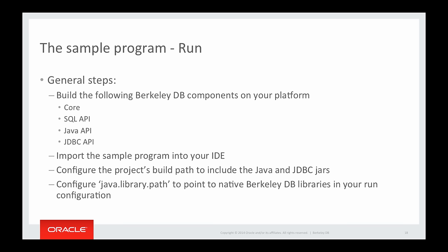Here are the general steps to run the sample program. First, you need to build the following Berkeley DB components on your platform: the Core API, the SQL API, the Java API, and the JDBC API. Then use the project files provided to import the sample program into your IDE. Next, configure the project's build path to include the Java and JDBC jars built from Berkeley DB. Finally, configure the java.library.path VM option to point to the native Berkeley DB libraries in your run configuration. We have created separate tutorials on how to build Berkeley DB components and set up the sample program in IntelliJ, Eclipse, or JDeveloper IDEs.